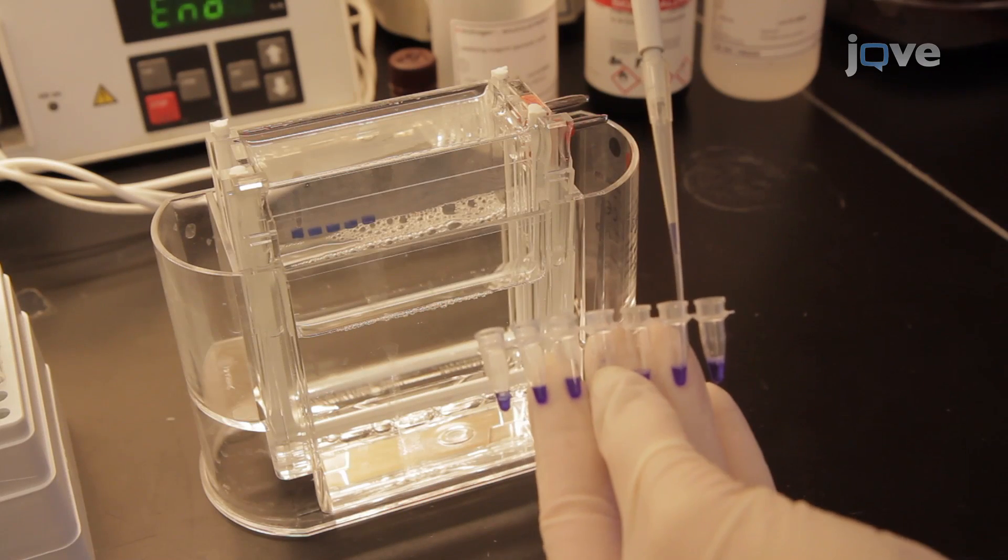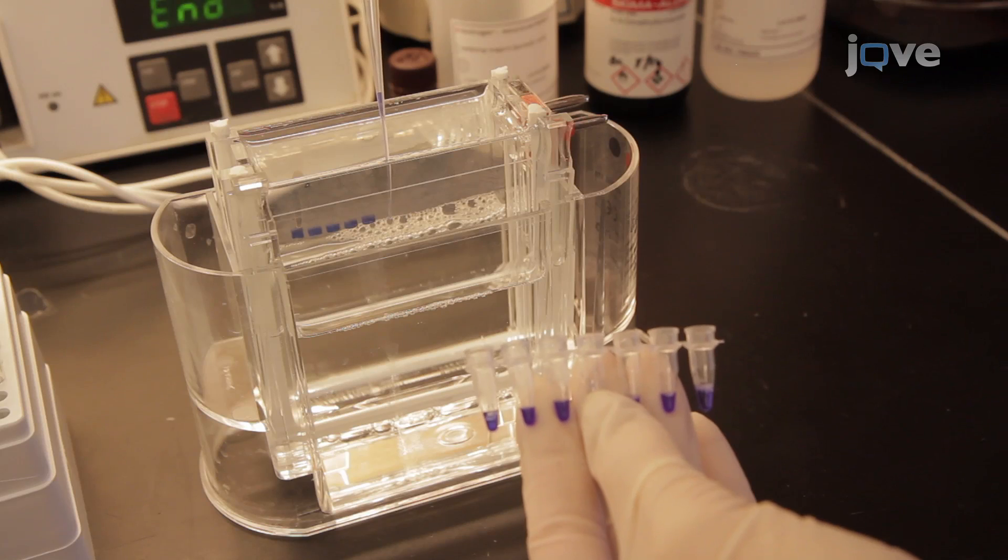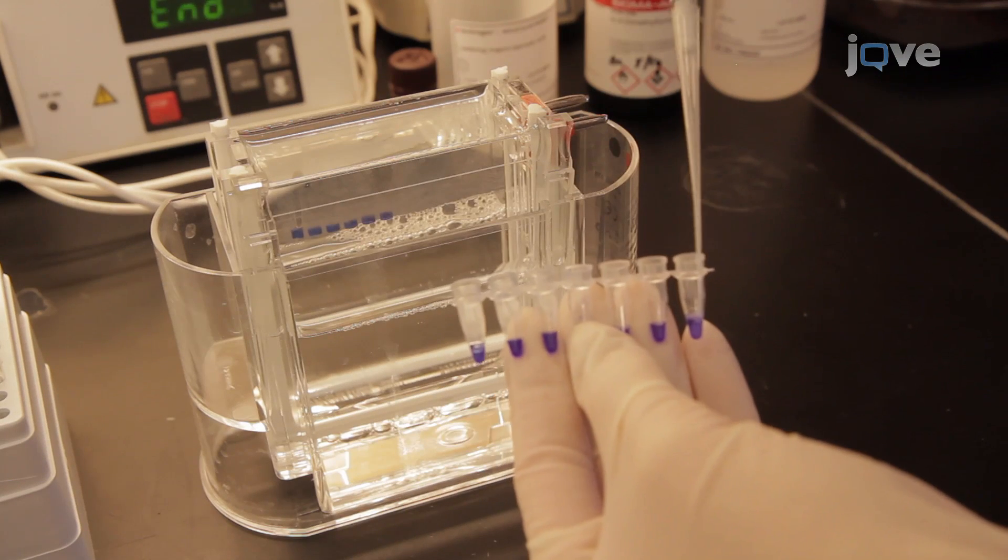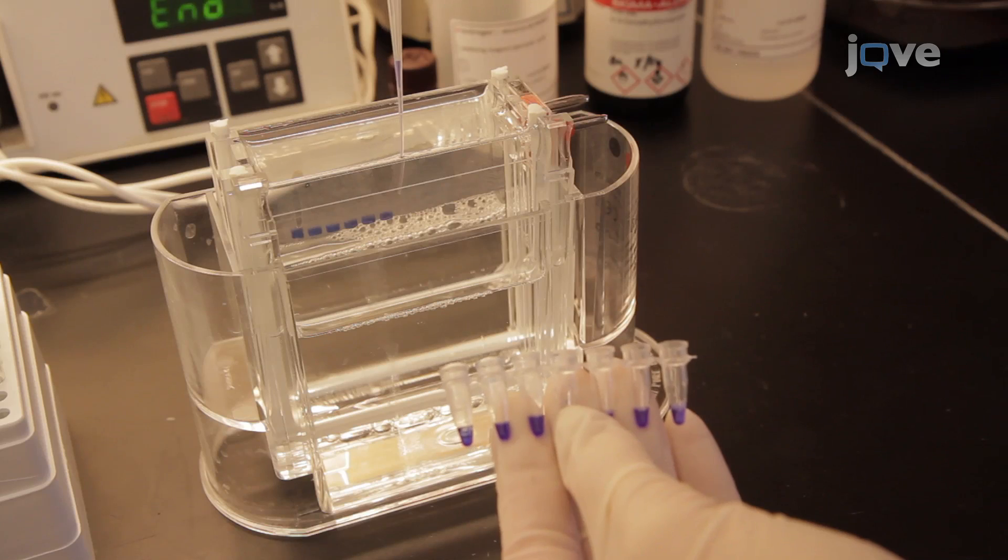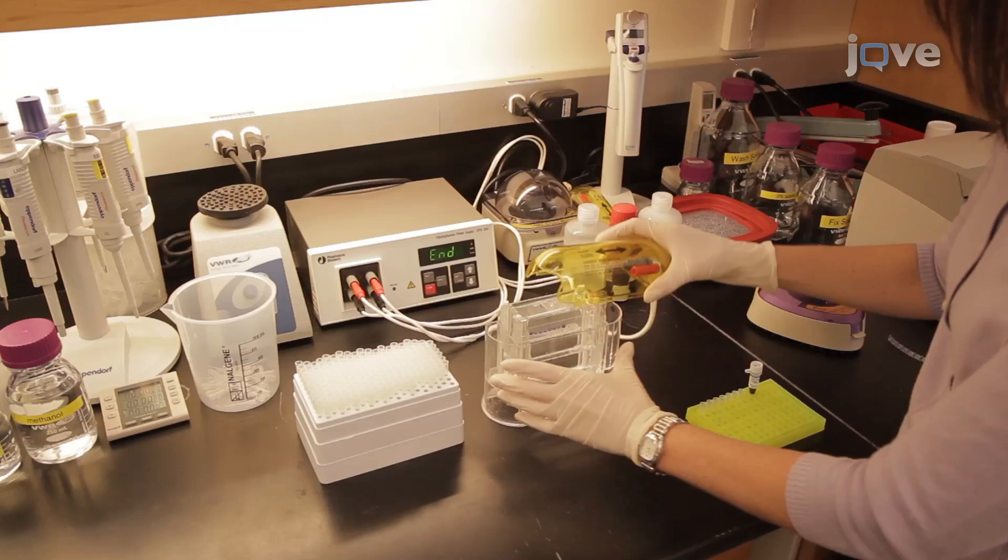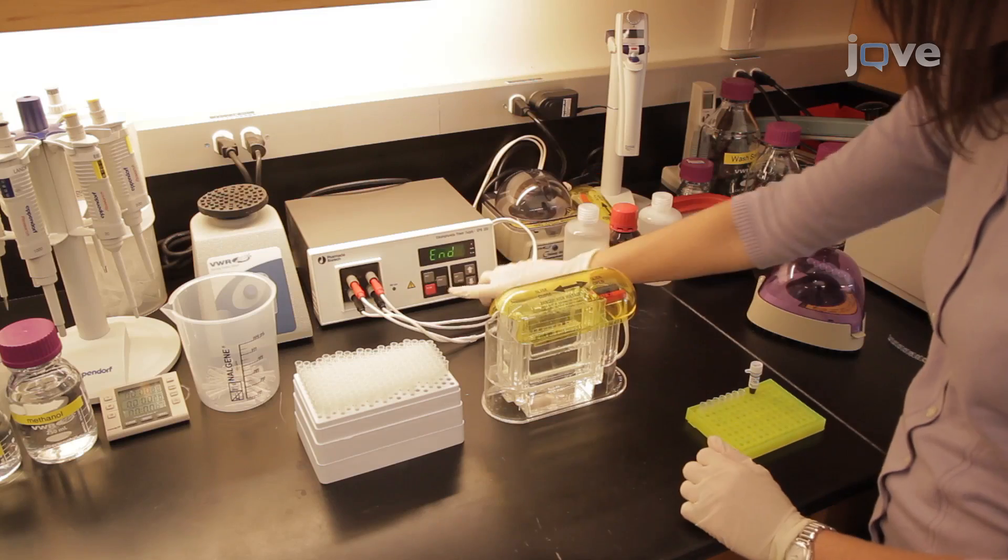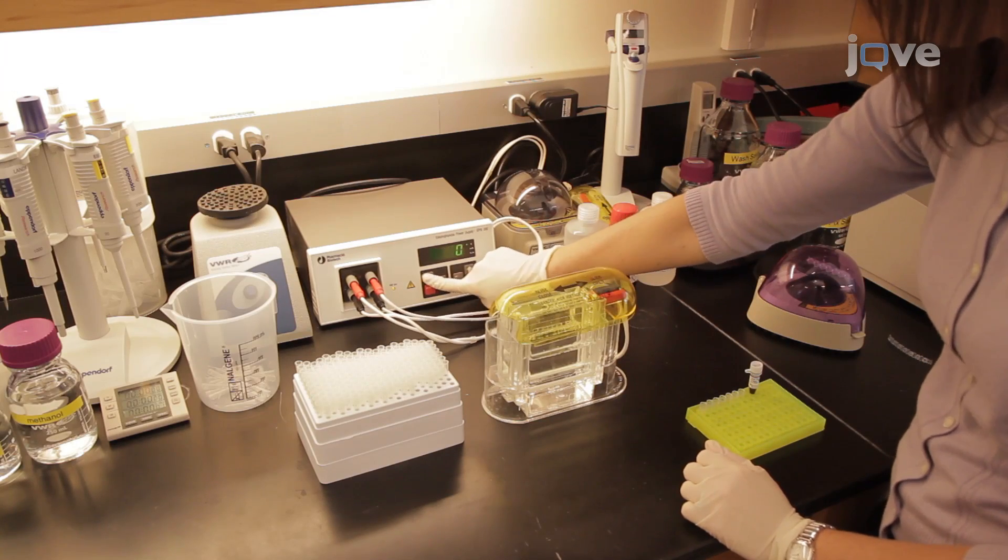Following incubation, load 30 microliters of each sample and 10 microliters of the protein marker on a 10 to 20% trisglycine gel, saving the remainder of each sample. Electrophorese the gel at 130 volts until the dye front is near the bottom of the gel.